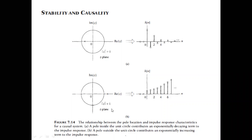We are discussing stability. The rule is: if you happen to know the transfer function, we can also determine causality and stability. That was possible with the impulse response, and it is also possible with the transfer function. With the transfer function you can always predict causality and stability.